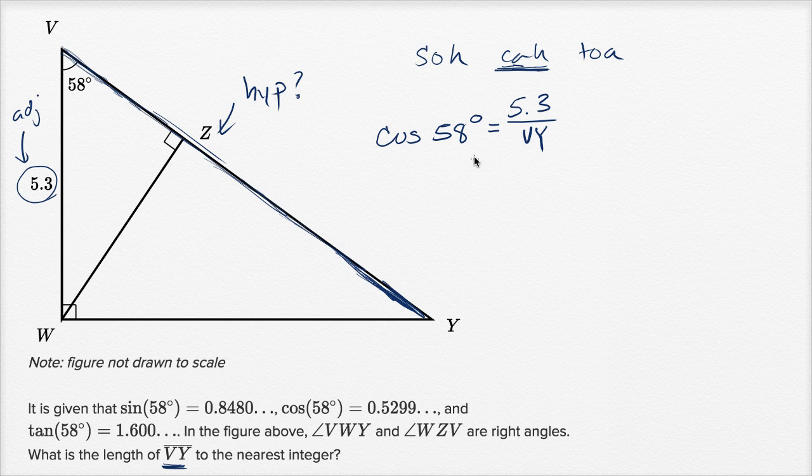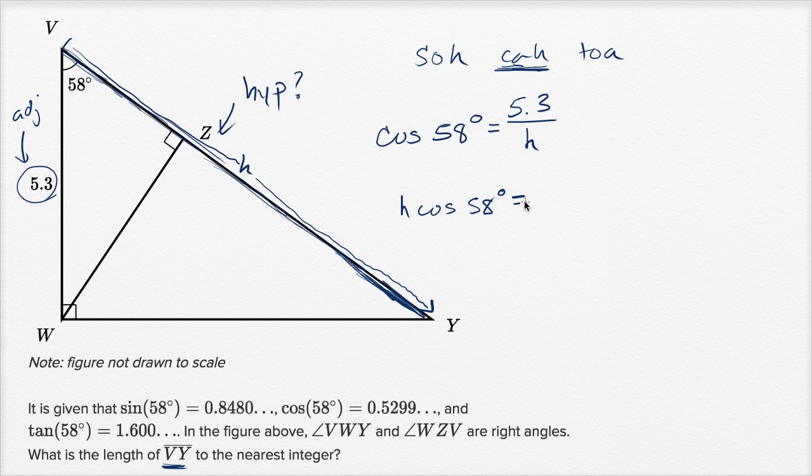Instead of having to write VY over and over again, let's just call this whole thing H, H for hypotenuse. So this whole thing right over here is equal to H. If you multiply both sides by H, you're going to get H times the cosine of 58 degrees is equal to 5.3. Then you can divide both sides by the cosine of 58 degrees, and you get H is equal to 5.3 divided by the cosine of 58 degrees.